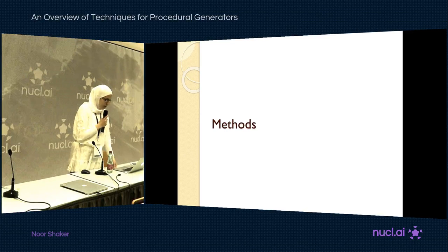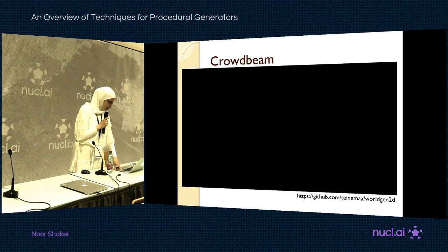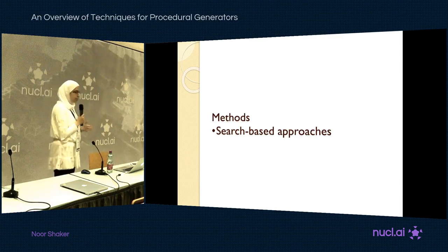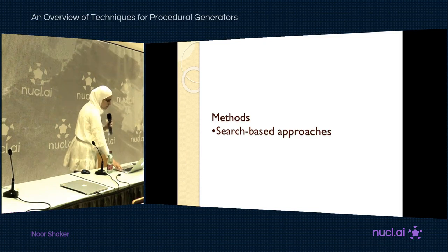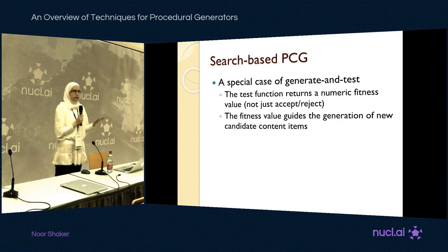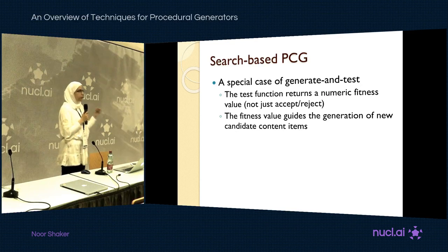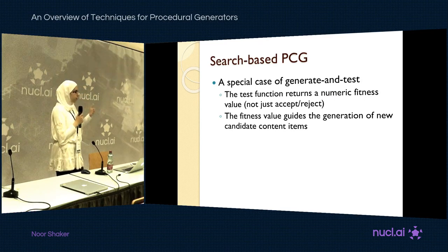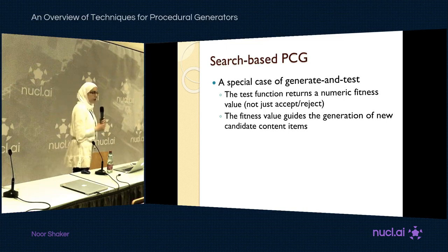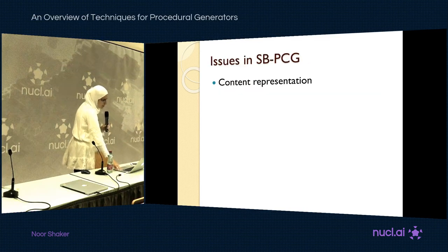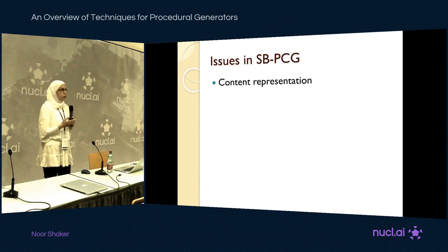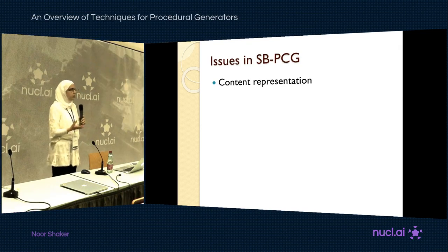I'll talk about the methods used for generating these types of games, starting with the search-based approach, which is the most widely used approach with many variations. This is essentially a special case of generate-and-test: you generate a population of individuals, pick the most feasible ones, breed those, evaluate the new generation, and iterate. To do this you need a way to represent the content and a way to evaluate it.